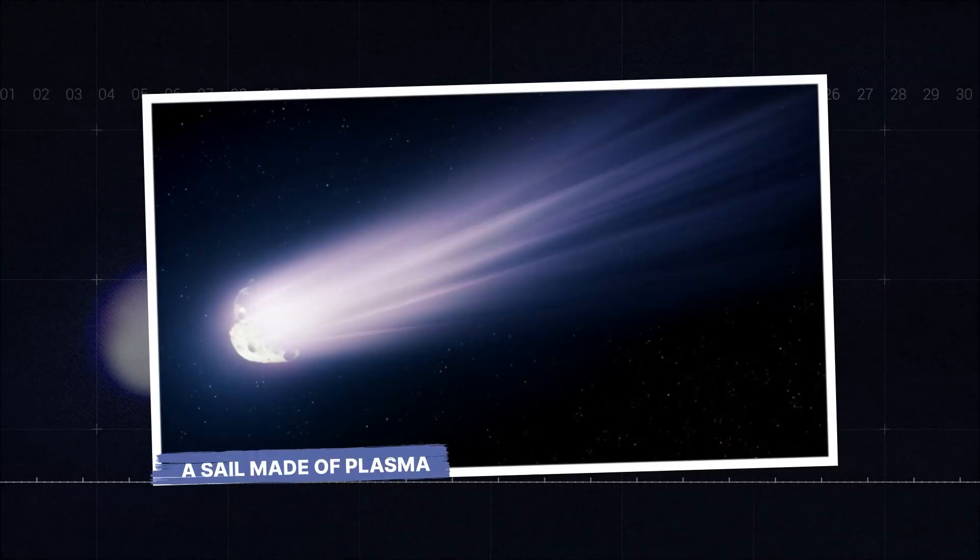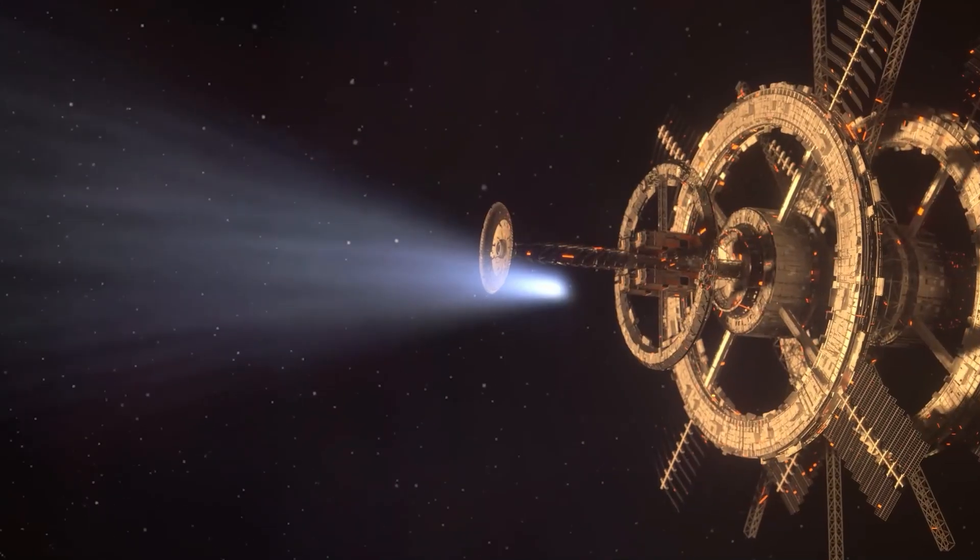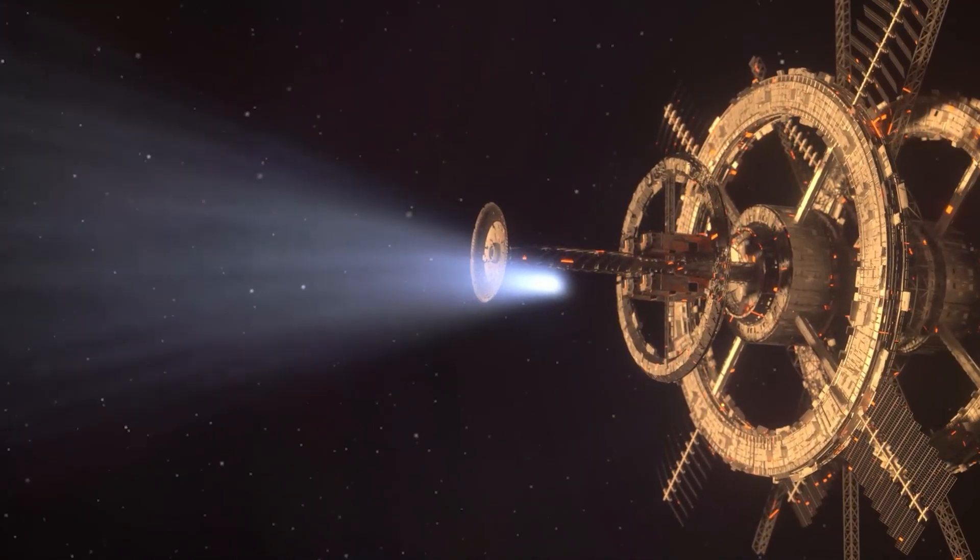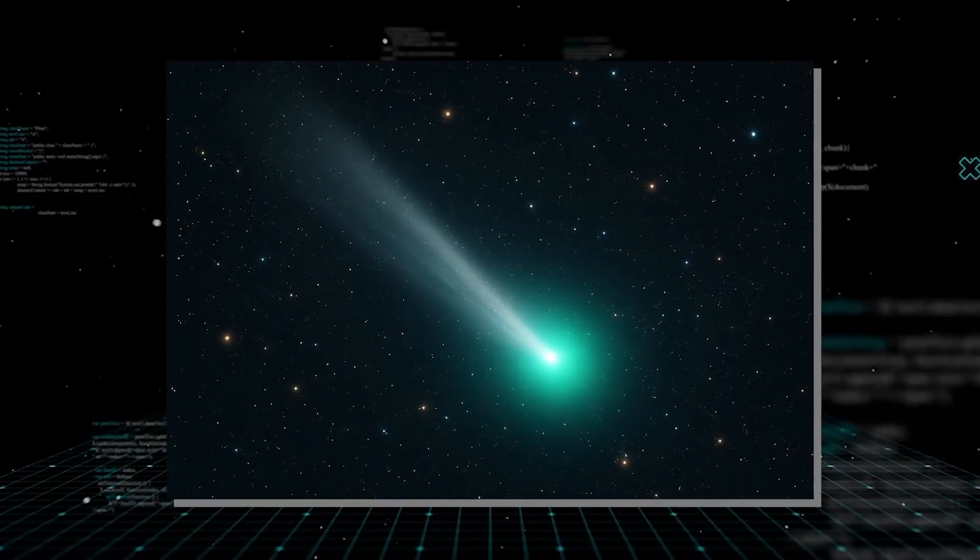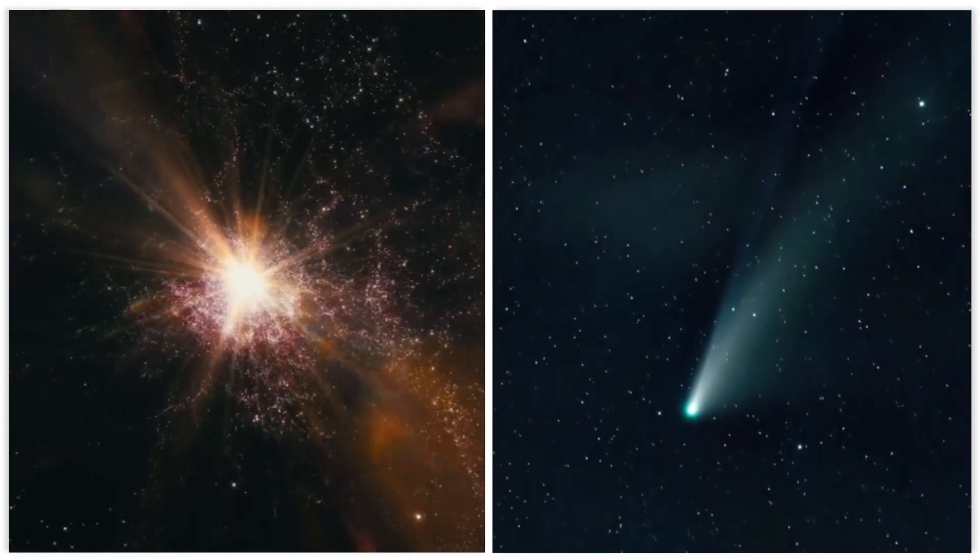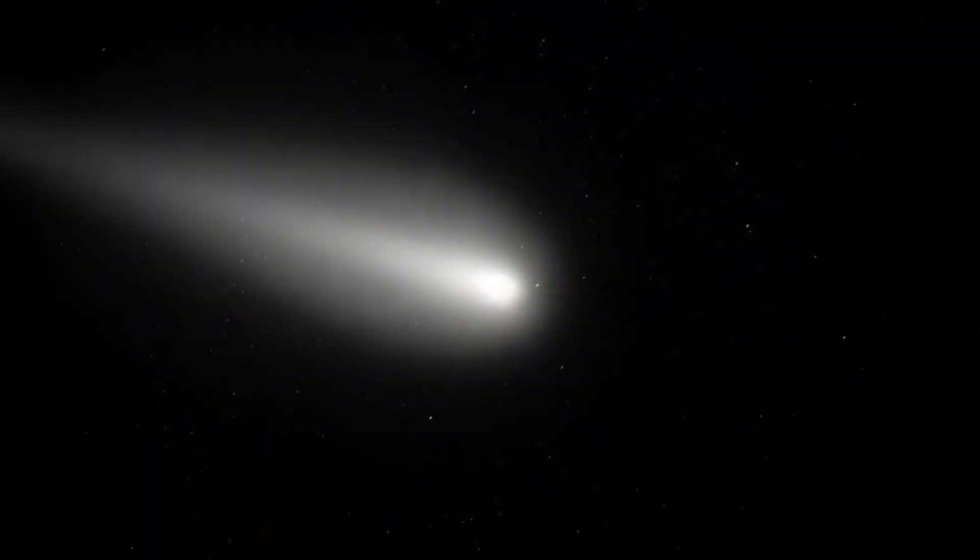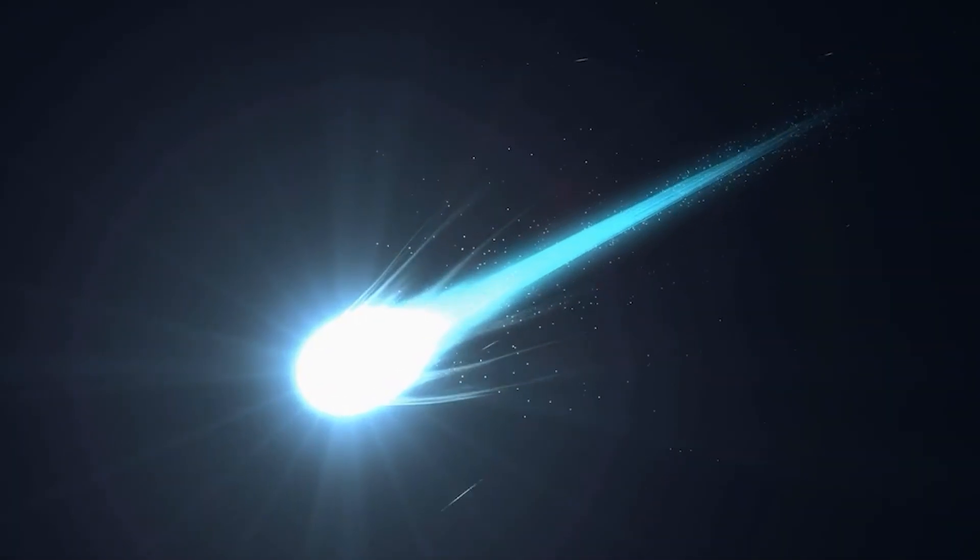A sail made of plasma. To understand how 3I Atlas could possibly be a machine, we need to talk about its massive gas cloud. Officially, it's a coma, made of what's called a dusty plasma. In simple terms, it's a mix of gas and dust, where the dust particles themselves have picked up an electric charge. This isn't that unusual for a comet.